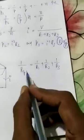Similarly, if N bulbs are connected in parallel, then Pp is equal to P plus P, N times, which implies Pp is equal to N into P.